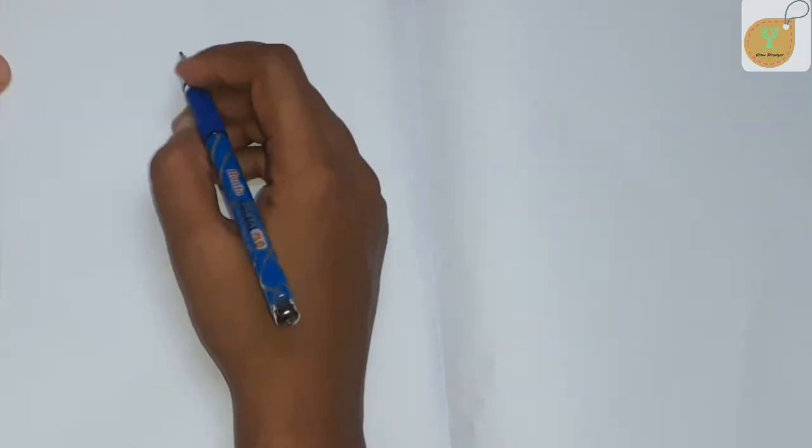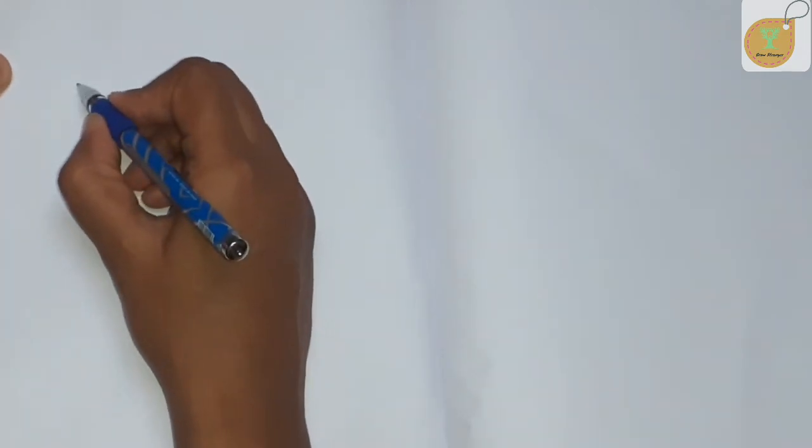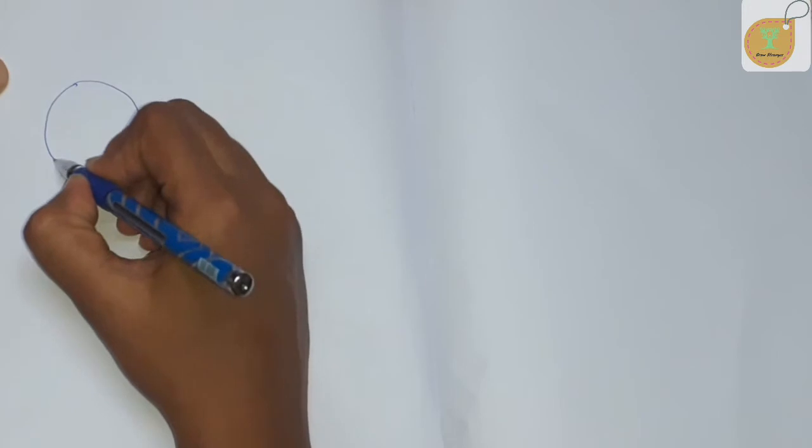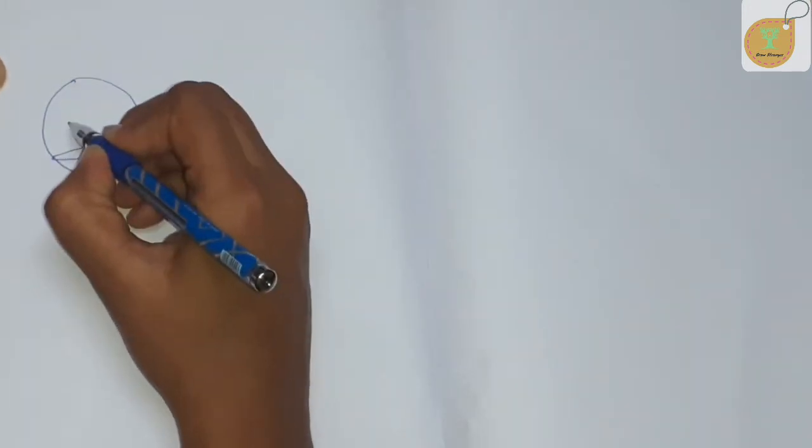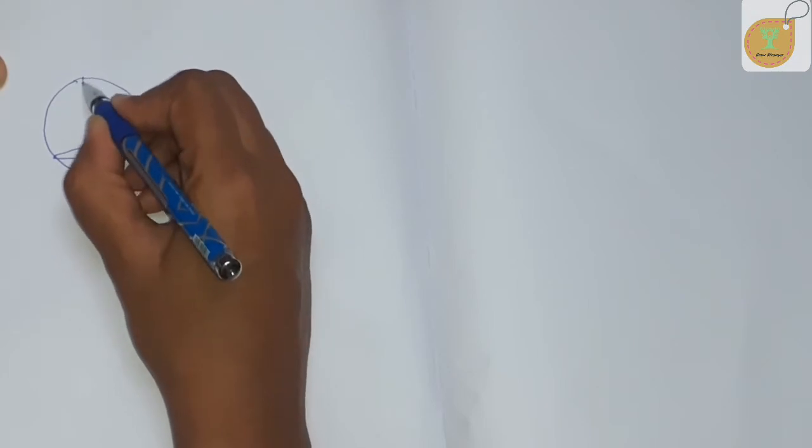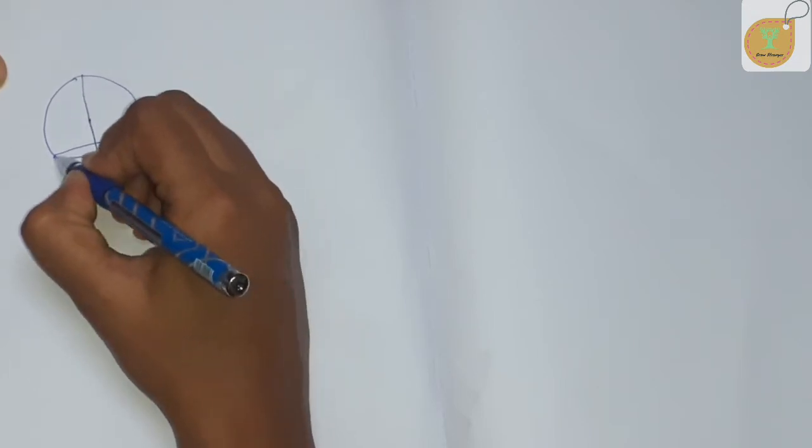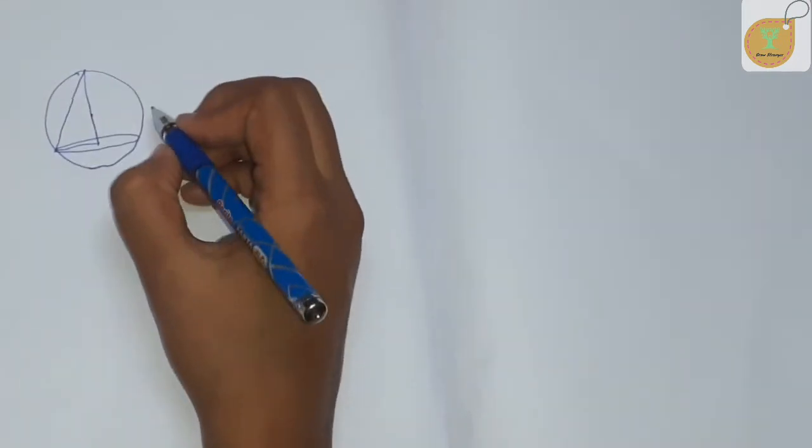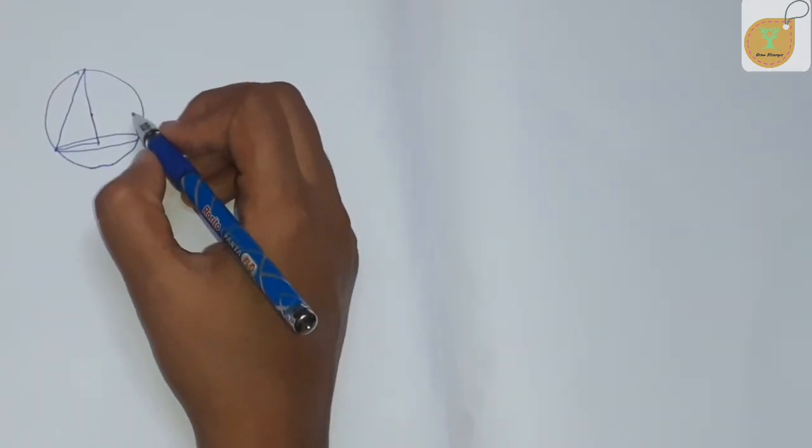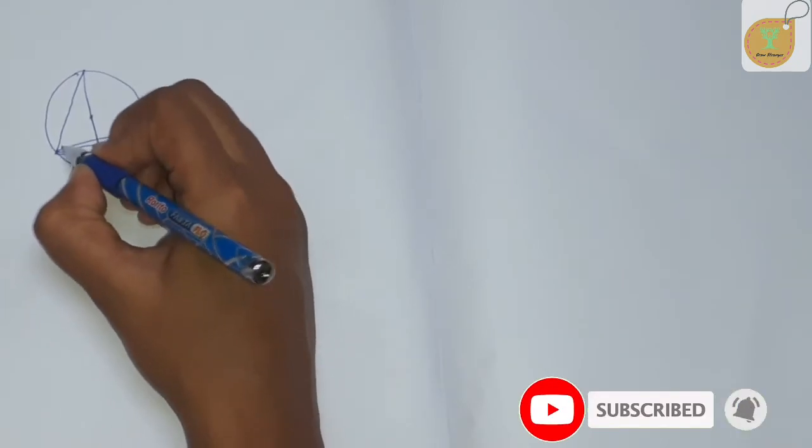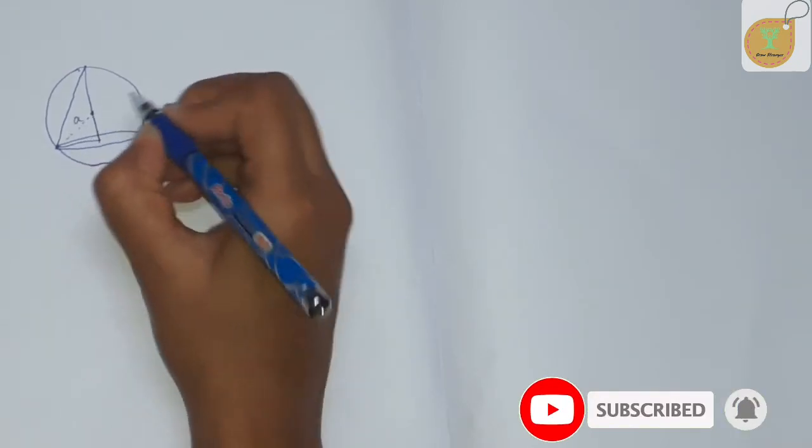Hi, welcome to Grow Stronger. The question says a right circular cone is cut from a solid sphere of radius a.